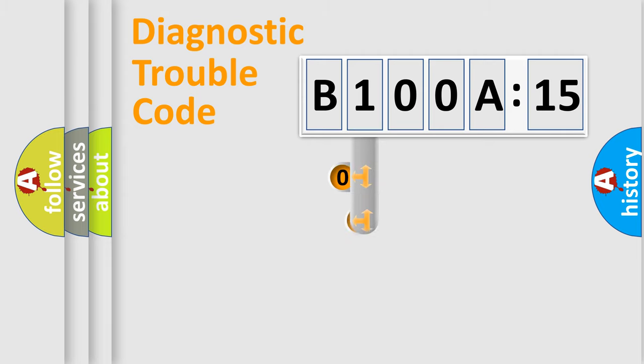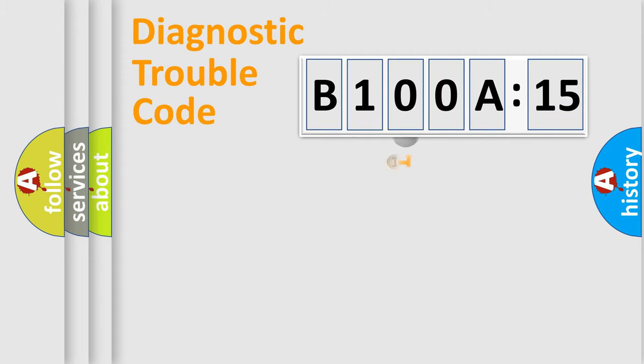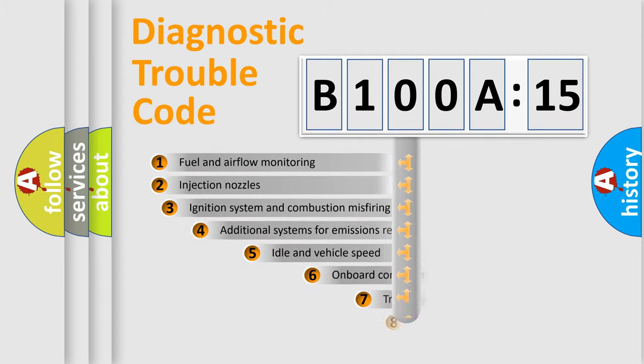This distribution is defined in the first character code. If the second character is expressed as zero, it is a standardized error. In the case of numbers 1, 2, or 3, it is a manufacturer-specific expression of the car-specific error.